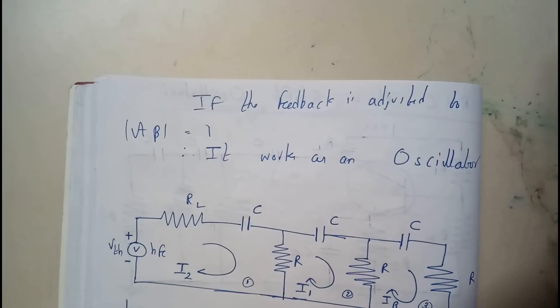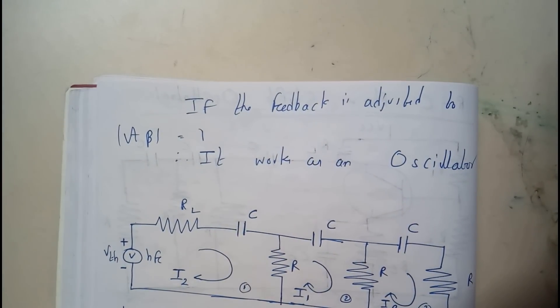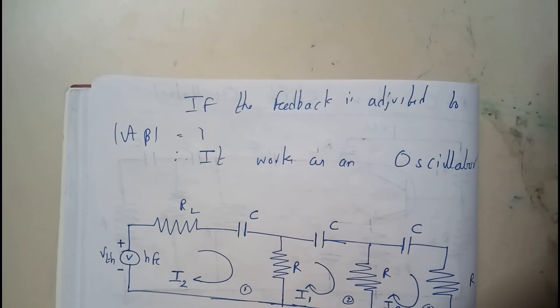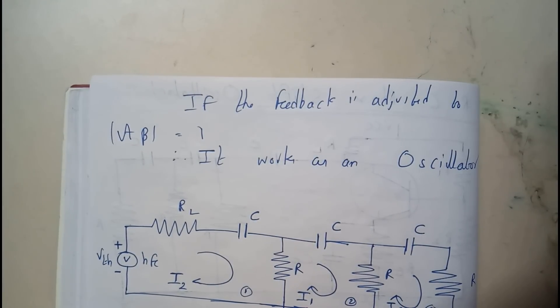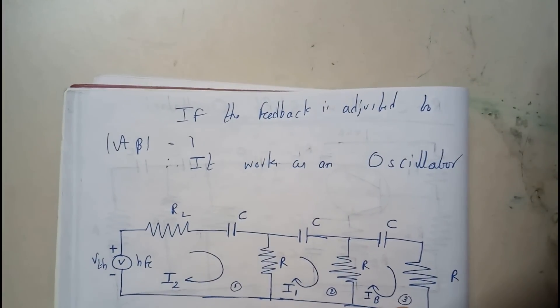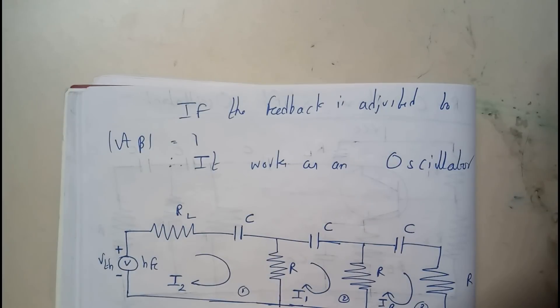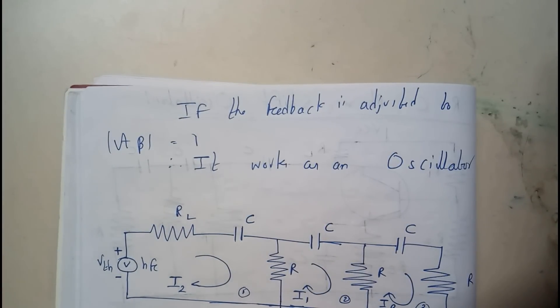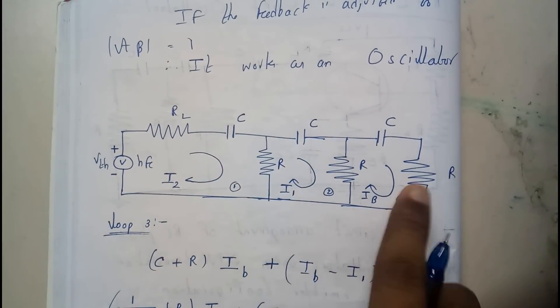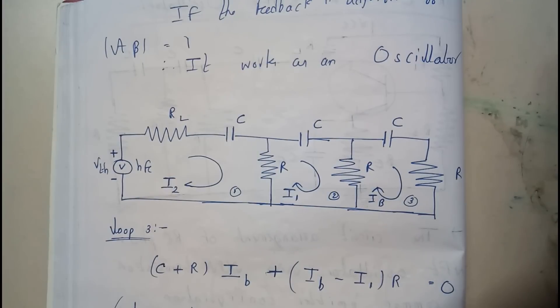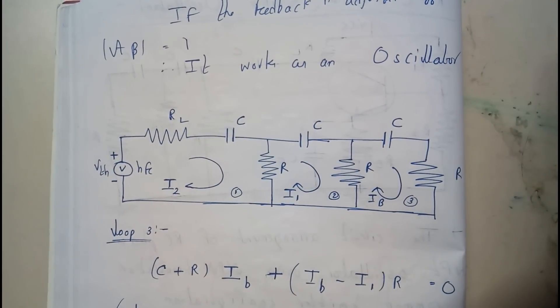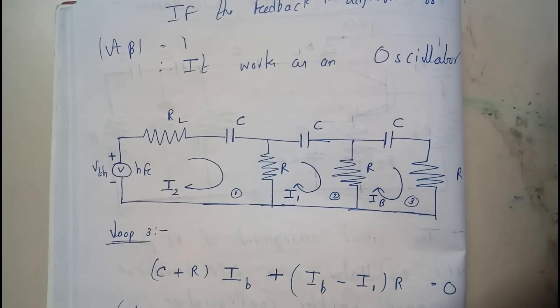We need beta equals to one for it to work as an oscillator. Now let us go through the complex analysis. We have the LC equation which is useful only for inductors and capacitors, but here we have capacitors and resistors, so we will use the loop method. We draw the right part of the diagram with three resistors, three capacitors, the load, and supply, giving VTH and HFE. We assume currents as i2, i1, and ib — any labelling works.